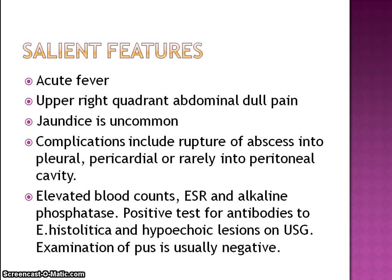Salient features of amoebic liver abscess include acute fever and upper right quadrant dull abdominal pain. Jaundice is uncommon. Complications include rupture of the abscess into the pleural, pericardial, or rarely the peritoneal cavity. Elevated blood counts, ESR, and alkaline phosphatase are present.